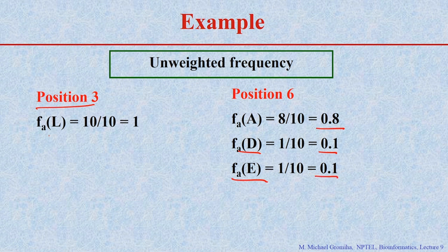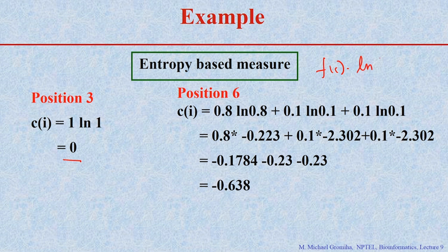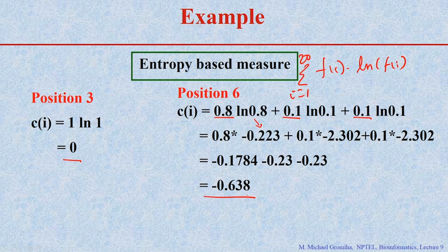Position number 3 is occupied only by leucine and the frequency is 10 by 10 equals 1. Now we convert these frequencies into scores using the entropy-based method. For position 3: c(i) = 1 × log(1) = 0. For position number 6, the equation is sum of f(i) × log(f(i)) for i equal to 1 to 20. With three amino acids — 0.8, 0.1, and 0.1 — the conservation score is: 0.8 × log(0.8) + 0.1 × log(0.1) + 0.1 × log(0.1), and finally we get a conservation score of 0.638.